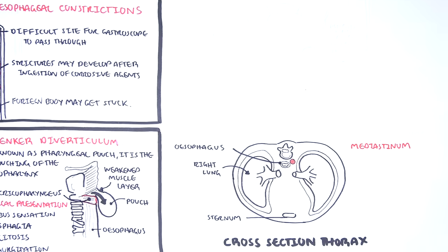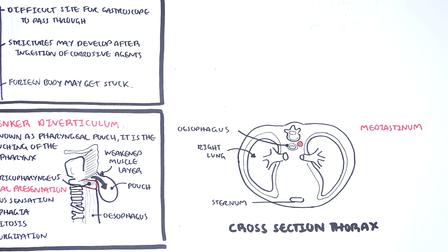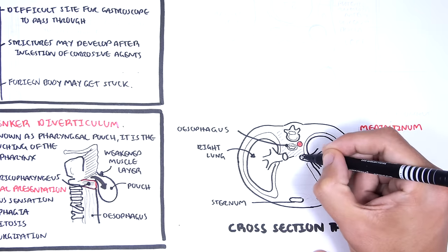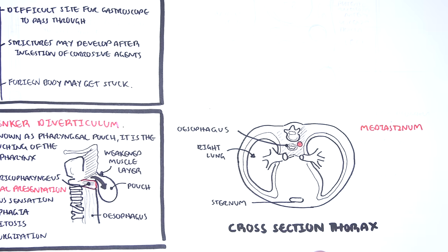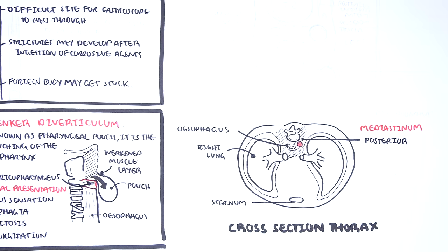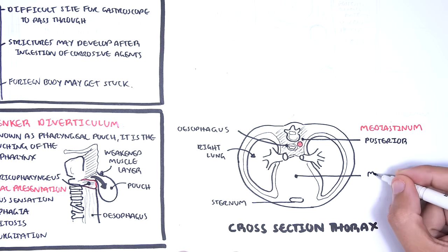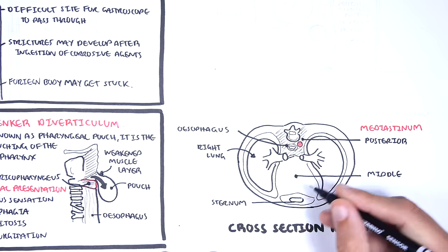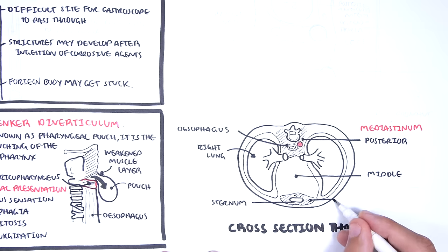The mediastinum is the area of the thorax which can be divided into superior and inferior compartments. The inferior compartments can be further divided into the posterior compartment where we find the esophagus, the middle mediastinum where we find the heart, and the anterior mediastinum where we find the sternum.